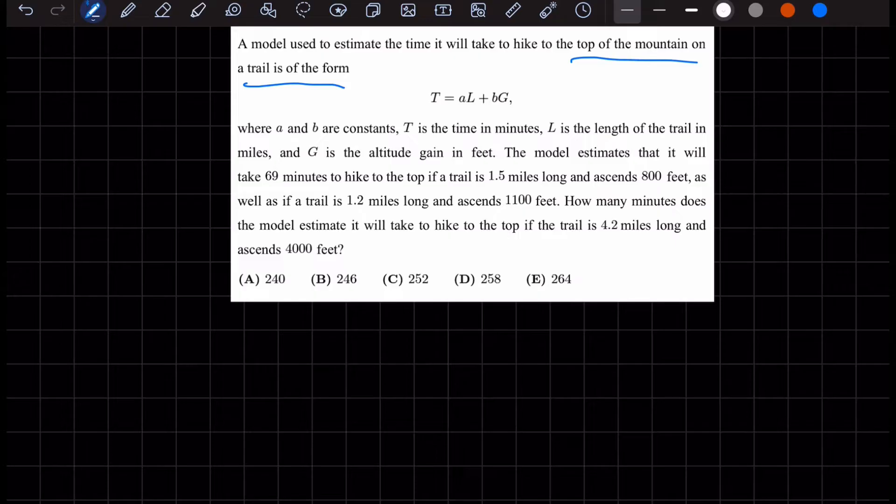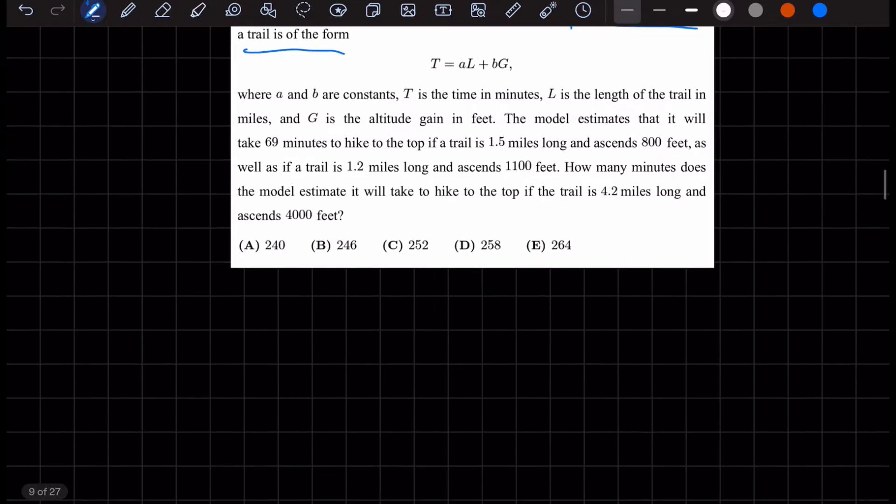Where T is time in minutes, L is the length of the trail in miles, and G is the altitude gained in feet. The model estimates that it will take 69 minutes to reach the top of the hill.